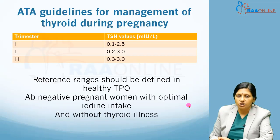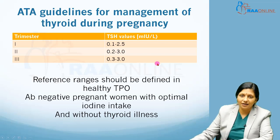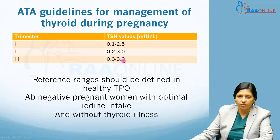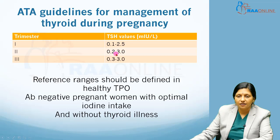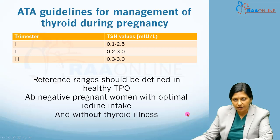The American Thyroid Association gives guidelines for the management of thyroid during pregnancy with specific reference ranges. In the first trimester, normal TSH values are between 0.1 to 2.5. In the second trimester, 0.2 to 3.0, and in the third trimester, 0.3 to 3.0. These reference ranges should be defined in healthy thyroid peroxidase antibody-negative pregnant patients with optimal iodine intake and without any thyroid illness. The upper limit of normal is 2.5 in the first trimester and 3.0 in the second and third trimesters.